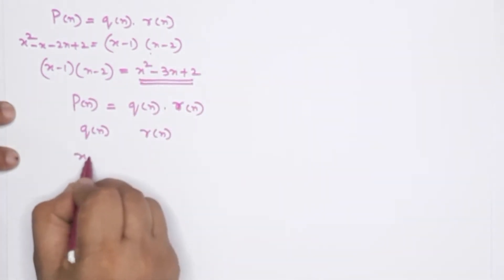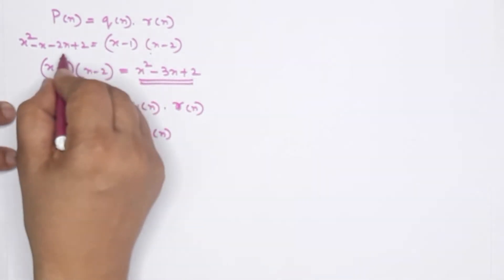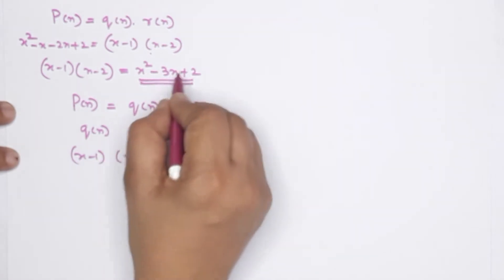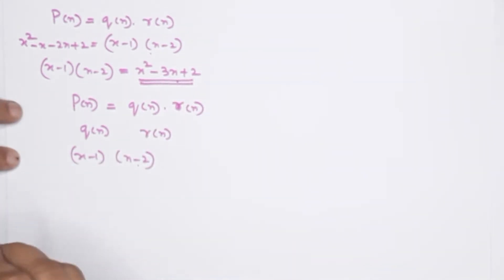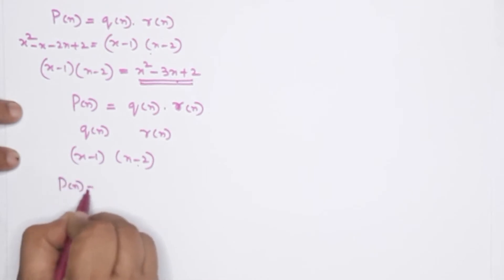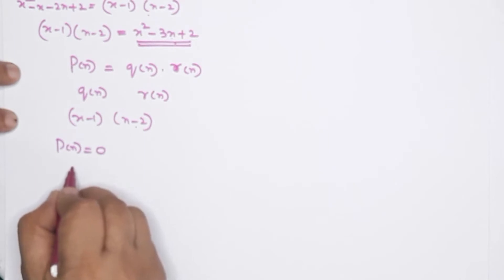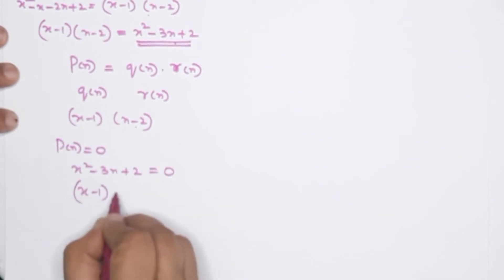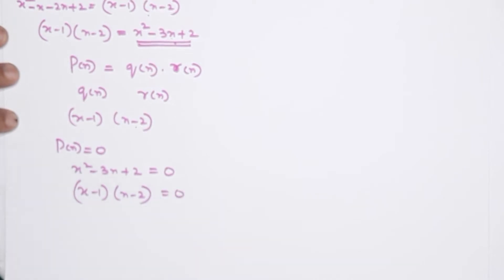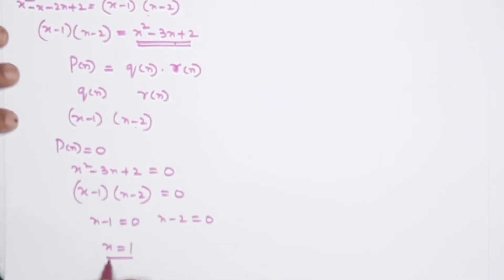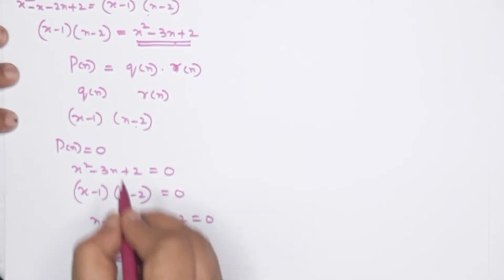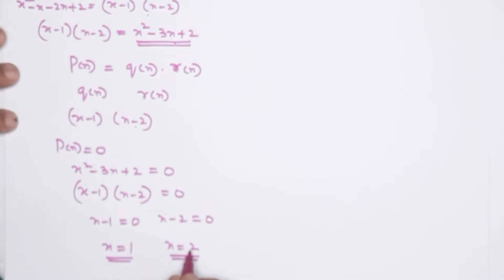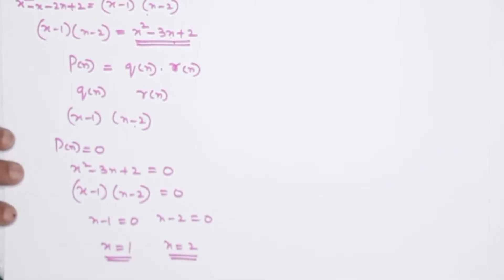That means x minus 1 and x minus 2 give us x squared minus 3x plus 2 as a polynomial. When P(x) is equal to 0, x squared minus 3x plus 2 equals 0, so x minus 1 times x minus 2 equals 0. Therefore x minus 1 equals 0, giving x equals 1 as the solution.